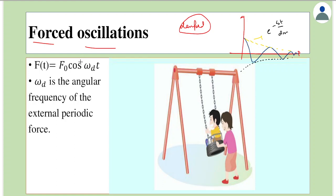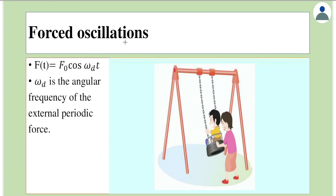Such oscillations where an external force is applied on the system, because of which the system oscillates, are called forced oscillations. The applied force could be periodic or non-periodic — there are many forms of it. What is prescribed in the syllabus is one form of periodic force, given as F₀ cos(ω_d · t), where ω_d is the angular frequency of the external periodic force.